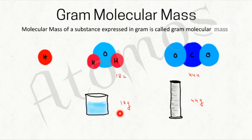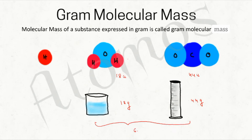So gram molecular mass of water is 18 grams and that of carbon dioxide is 44 grams. The gram molecular mass of any substance will contain 6.022 × 10²³ molecules. There is something special about this number.